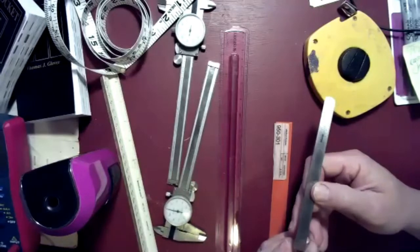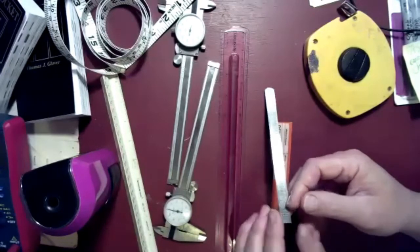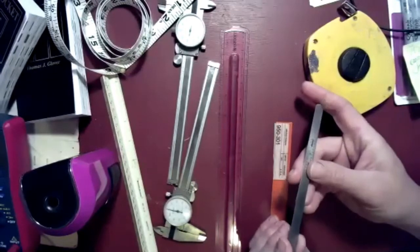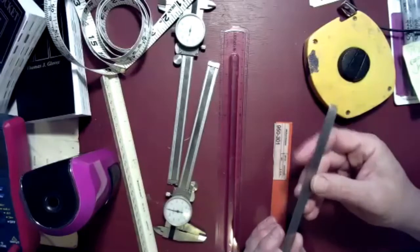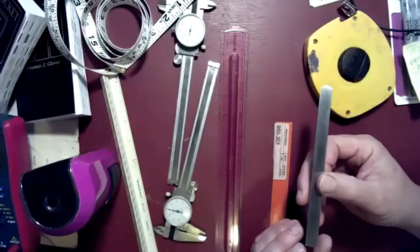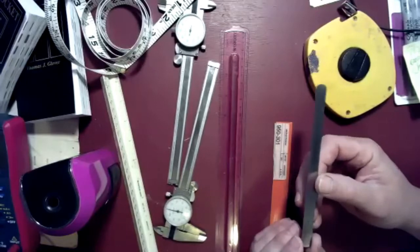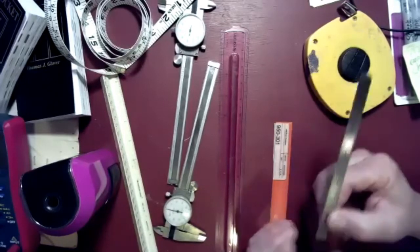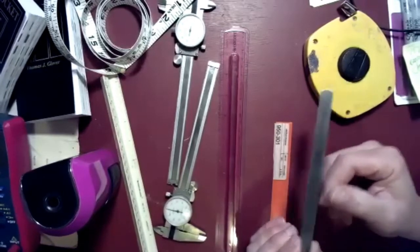I can check diameter of screws to know what kind of screw it is. I can check the length, I can check widths, I can check angles. This really is the steel rule of choice for me. I'm not going to go into how to use it, that's in the video. If you have questions ask me.